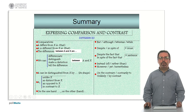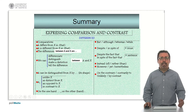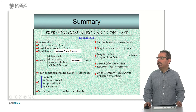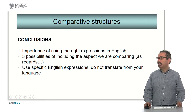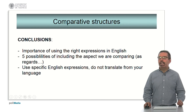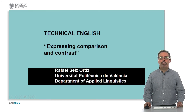Here we have a summary of the most typical comparison and contrast structures we have seen throughout this learning object. You can have a look at them and the examples from the presentation. As a conclusion, it is very important to use the right expressions in English. We have five possibilities for introducing the aspect we are comparing: 'as regards', 'regarding', etc. And lastly, you have to use the specific English expressions rather than translating from your own language, which is always very dangerous. Thank you very much for your attention and I hope that was useful.